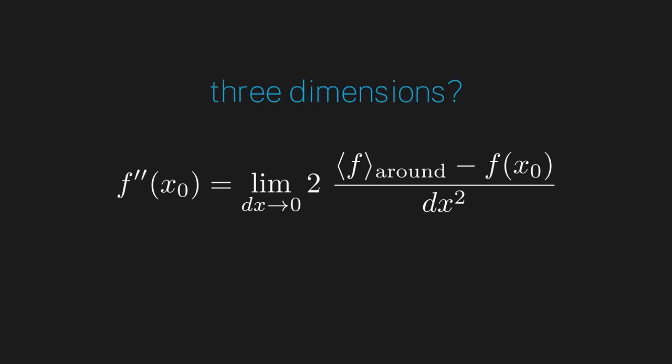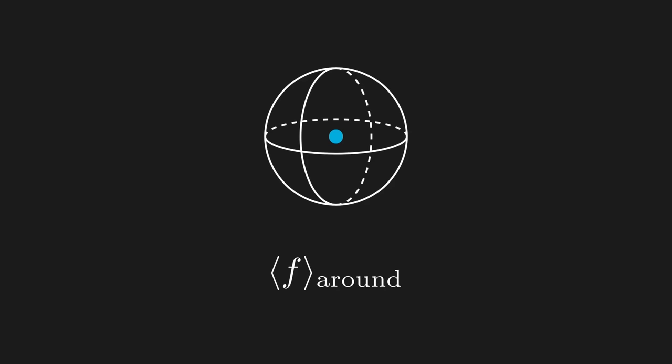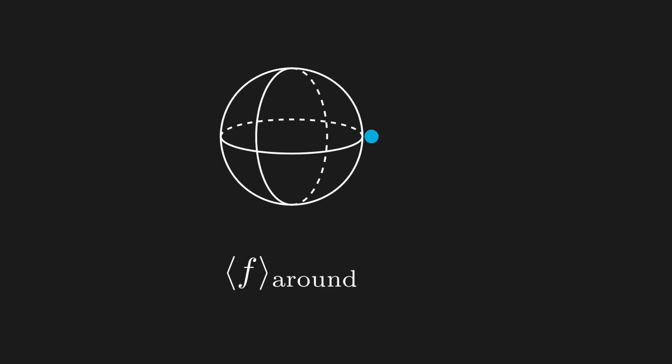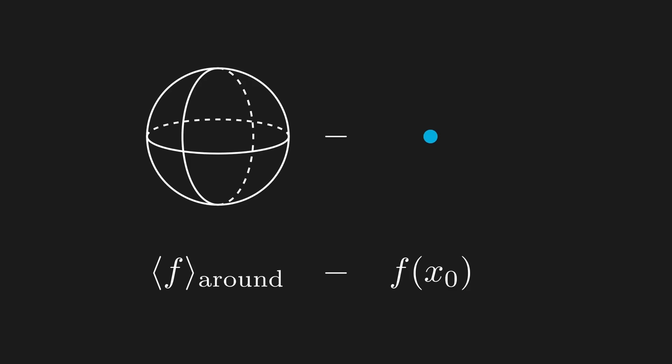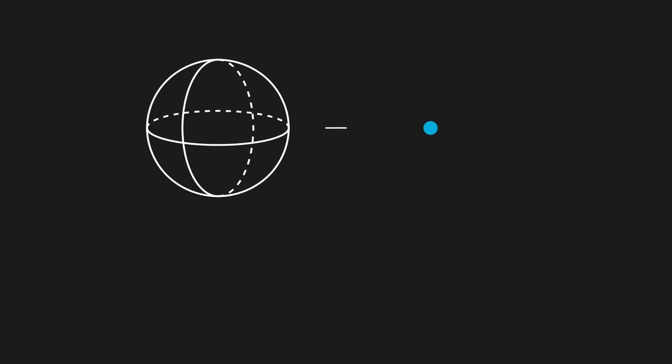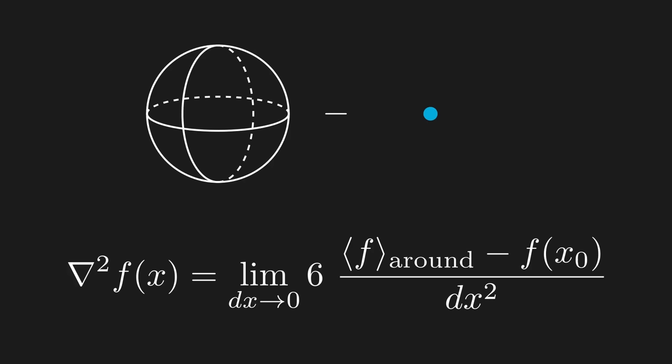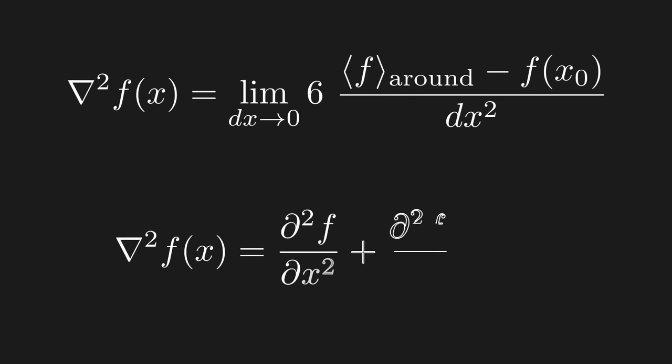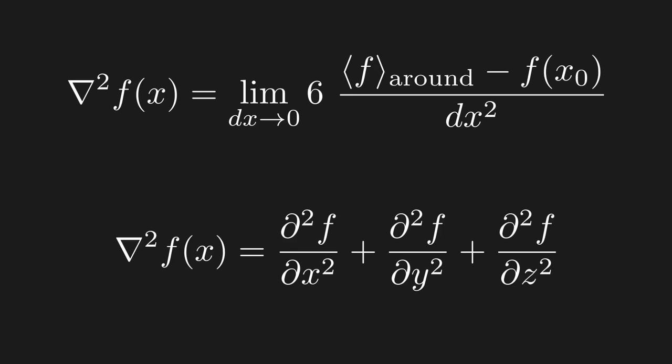Now, say we wanted to extend this idea to three dimensions. In 3D, to find the average value of a function around a point, we look at a tiny sphere of radius dx around that point, take the average value of all the points on that sphere, and subtract the value in the middle. Our claim is that this is related to some three-dimensional version of the second derivative. It turns out this is 100% correct: in three dimensions, the corresponding expression uses the Laplacian. The only difference is that the two becomes a six — and in fact that number is always two times the number of dimensions.